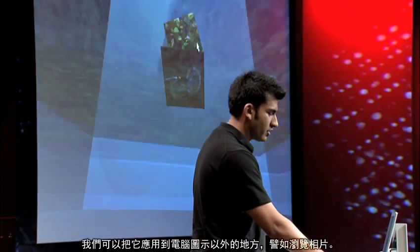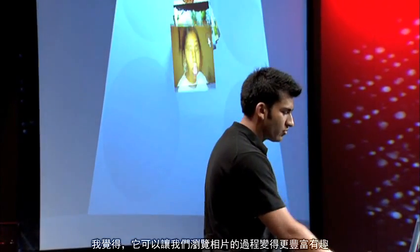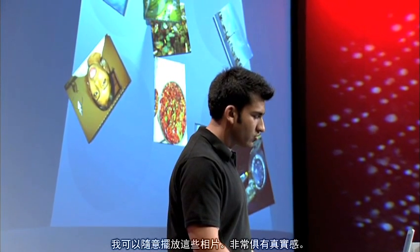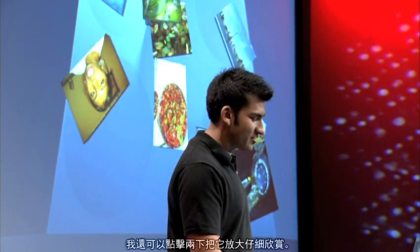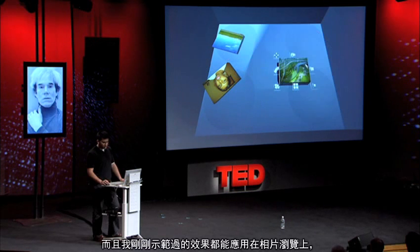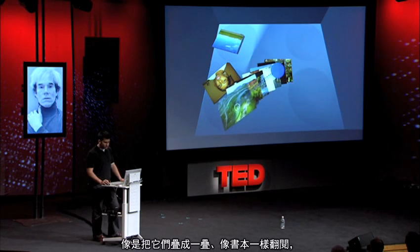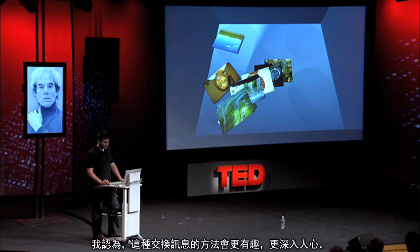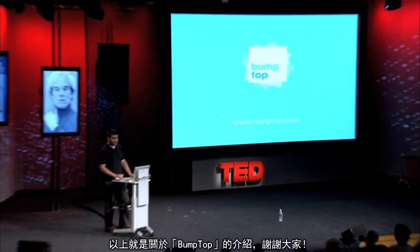Beyond icons, I think another really cool domain for this software applies to browsing photographs. I think it could really enrich the way we browse our photos and bring it to that shoe-box-of-photos-on-the-kitchen-table kind of feeling. I can toss these things around — they're so much more tangible and touchable. I can double-click on something to take a look, pile things up, flip through them, move photos to the back, delete them. It's just a much more rich way of interacting with your information. And that's BumpTop. Thanks.